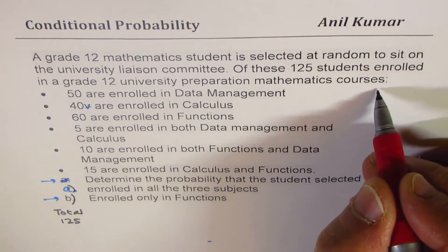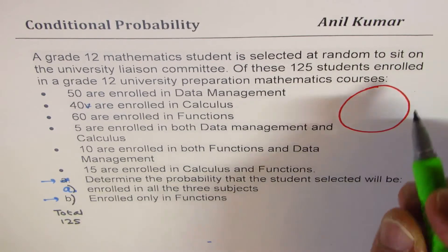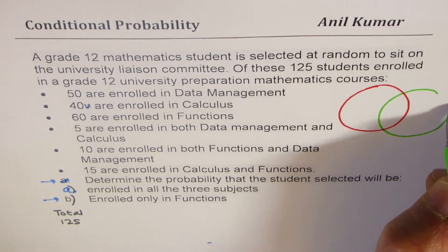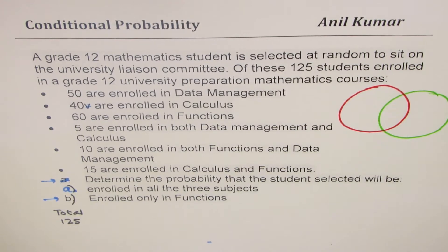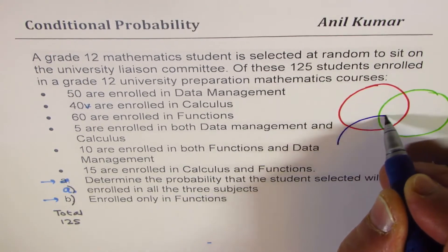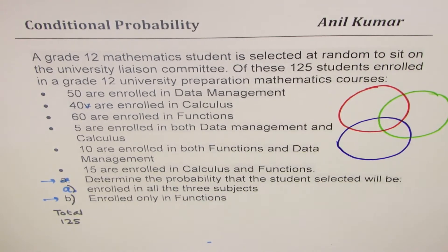Let me use this place here. Let's say one circle for calculus, the other one for data management and then we'll draw one for functions, overlapping. These are the three circles.